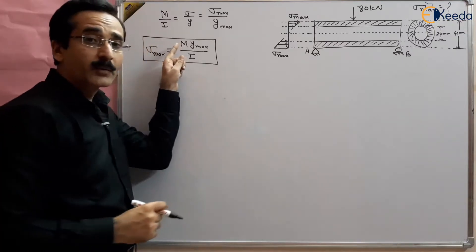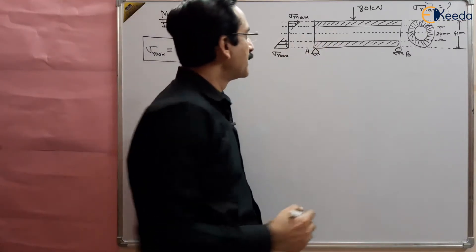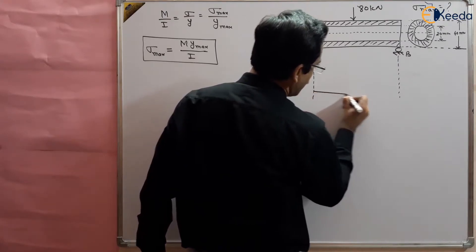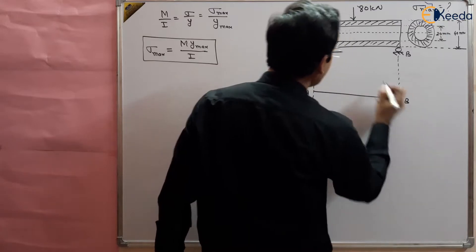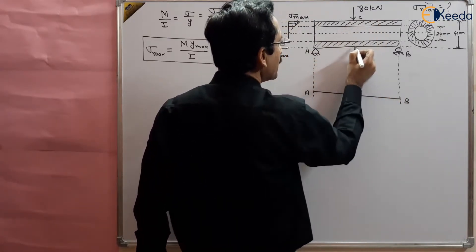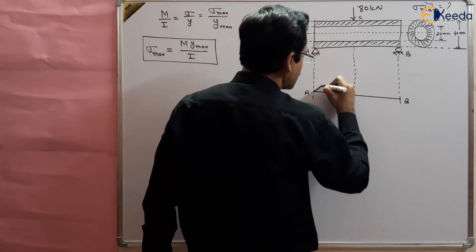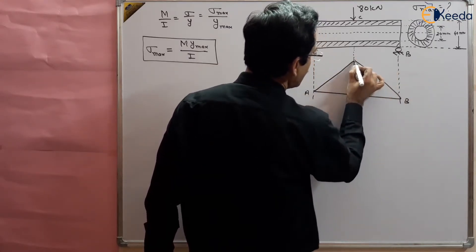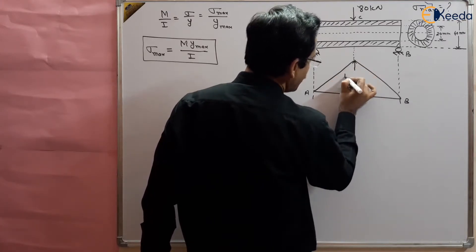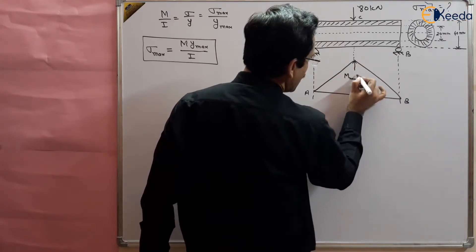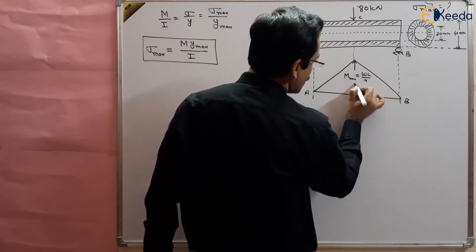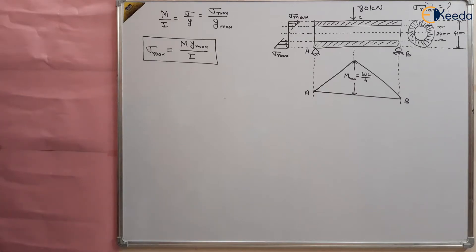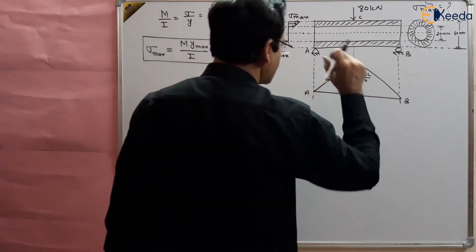The bending moment is also changing because it is a simply supported beam. For a simply supported beam, remember the bending moment diagram: if AB is the reference line, the bending moment is maximum at the center. Go to the shear force and bending moment diagram chapter — the maximum bending moment occurs at the center and is given by WL/4.